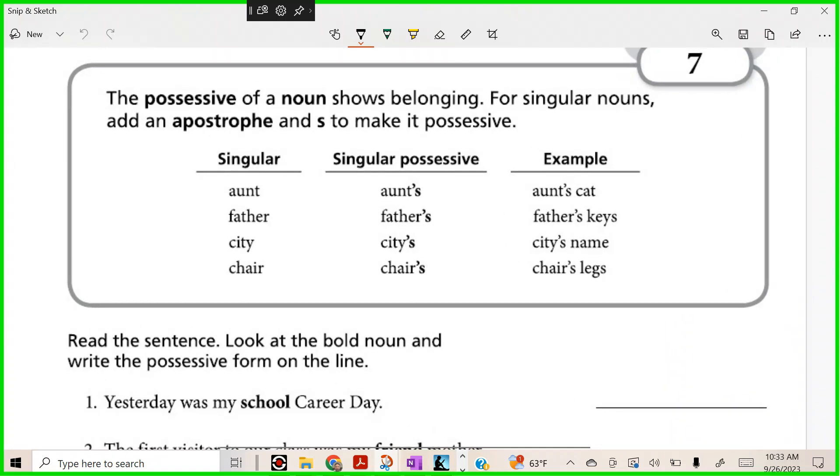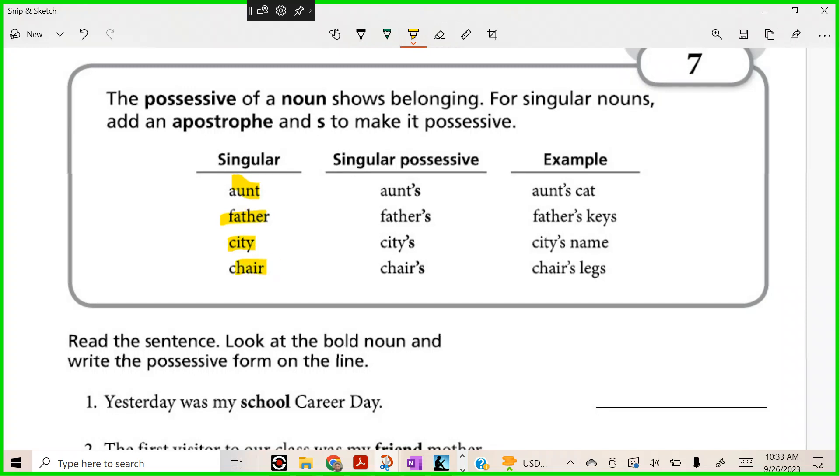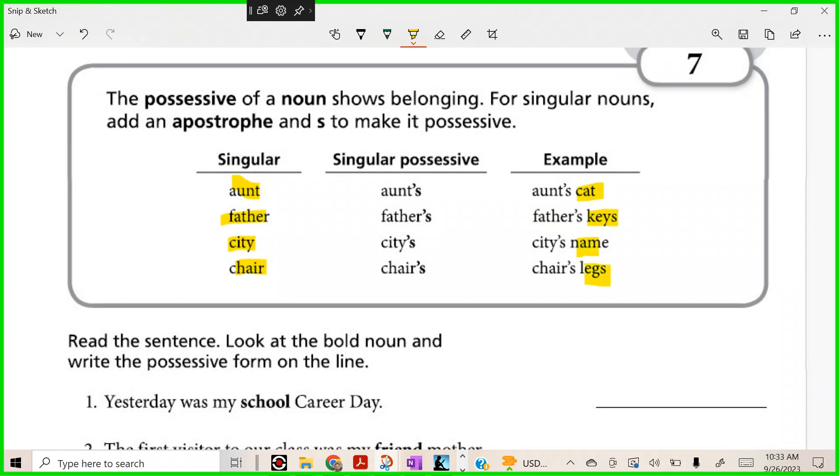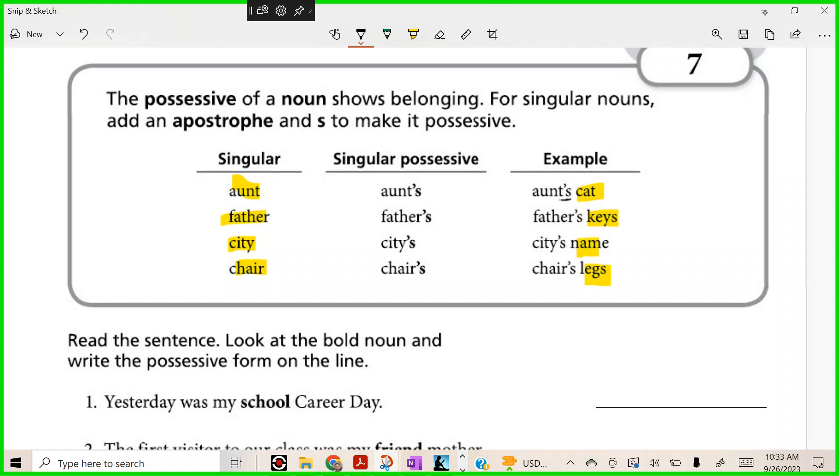Let's take a look at these singular words: aunt, father, city, and chair. If I wanted to show that a cat, keys, a name, and legs belong to these folks, here's how it would work.